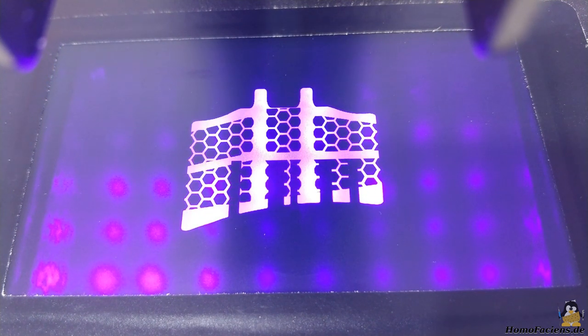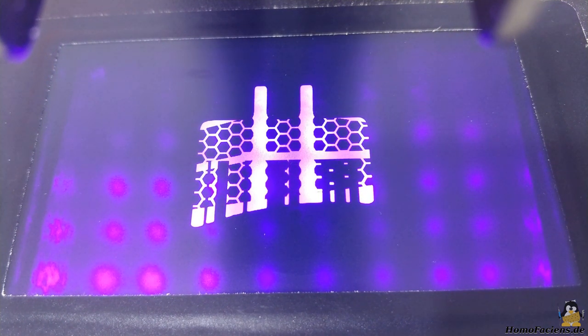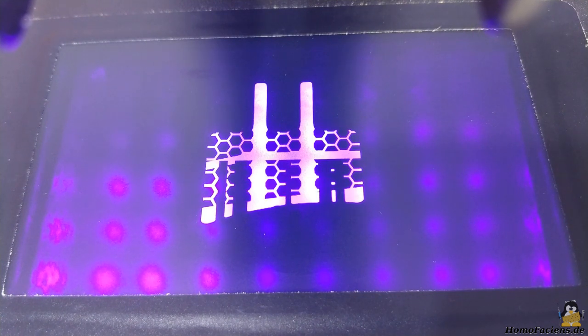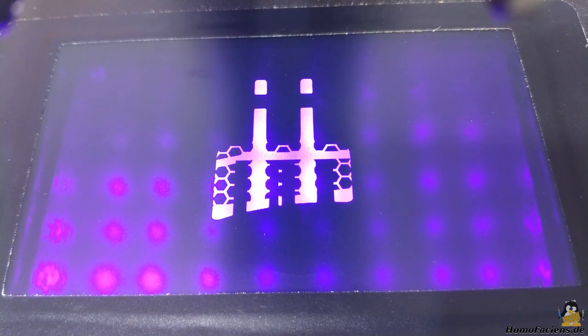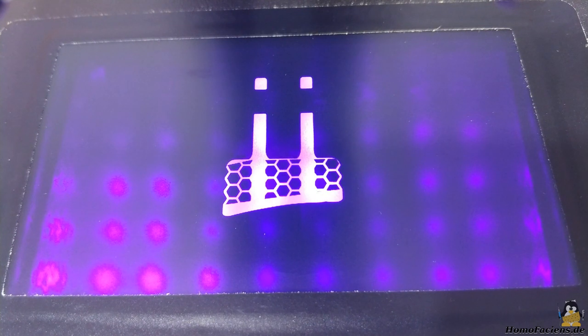As soon as the resin is sufficiently hardened, a stepper motor lifts the object to be printed for the layer thickness and the exposure mask of the next layer is generated by the display.